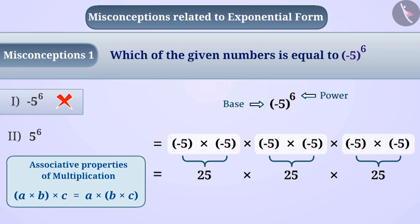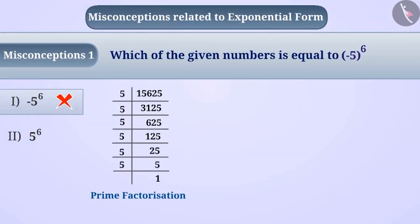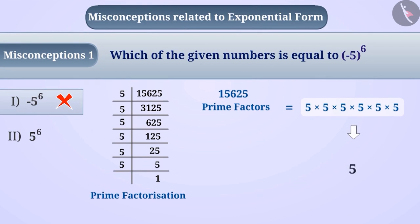If we multiply these groups together, the multiplication of positive numbers is positive, so we get the result 15,625, which is again a positive number. Performing prime factorization, we get the prime factors of 15,625, which can be represented as 5 raised to the power of 6 in exponential form. This shows that minus 5 raised to the power of 6 is equal to 5 raised to the power of 6.